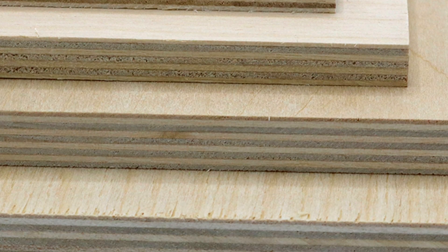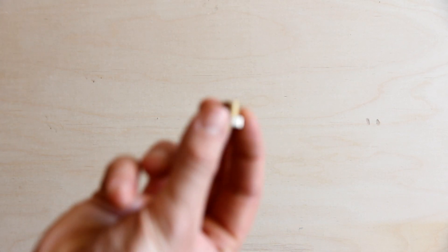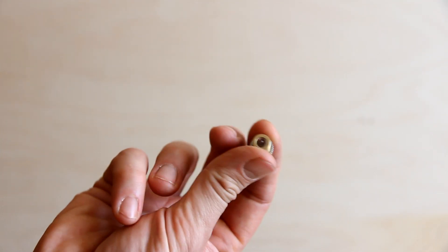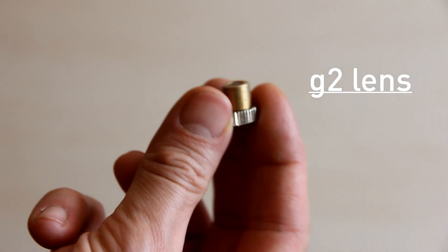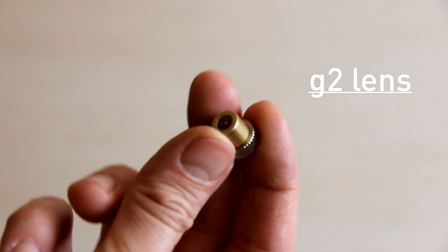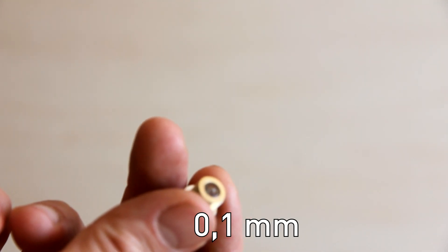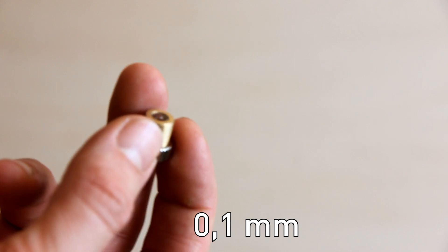First thing you need to know is that you need a G2 lens for it. This is a short focal G2 lens for cutting. It gives you a smaller spot closer to 0.1 millimeter, maybe 0.15 millimeter.